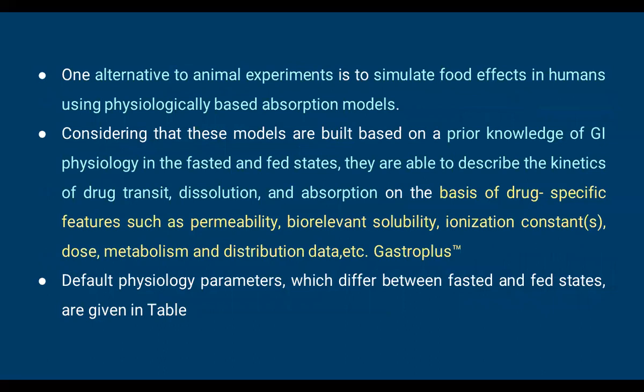One alternative to animal experiments is to simulate the food effect in humans using a physiologically-based absorption model. These models are built on prior knowledge of GI physiology in fasted and fed states, and are able to describe the kinetics of drug transit, dissolution, and absorption on the basis of drug-specific features such as permeability, biorelevant solubility, ionization constant, dose, metabolism, and distribution data — all using GastroPlus.